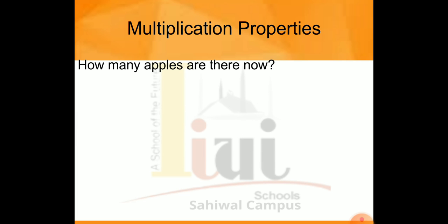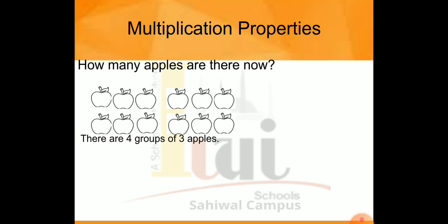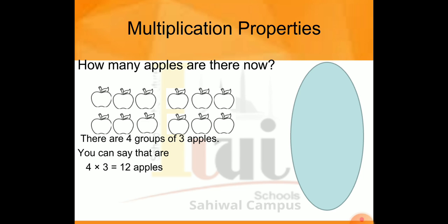Now students, we change the order. Before, we had 3 groups with 4 apples in each group — 3 multiplied by 4. Now we look at it as 4 groups with 3 apples in each group — that is 4 multiplied by 3. The answer is still 12.